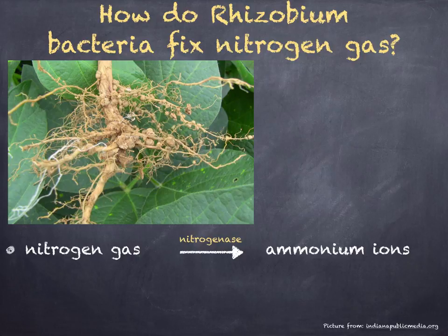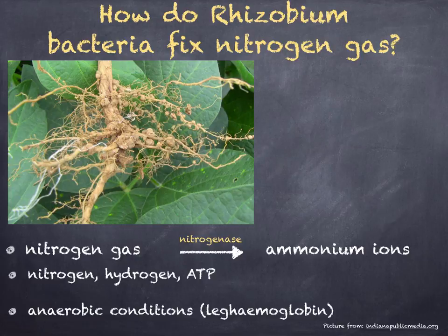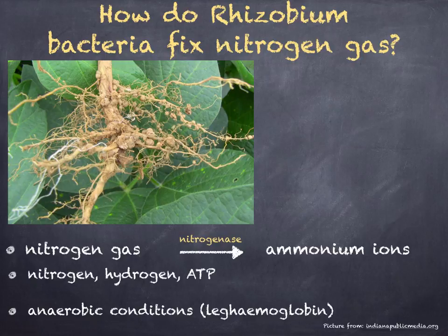The process requires a supply of hydrogen, ATP, and anaerobic conditions. The hydrogen comes from reduced NADP, which is produced by the plant. The ATP comes from the metabolism of sucrose produced during photosynthesis — when sucrose is used in respiration, ATP is produced. Anaerobic conditions are maintained by a protein similar to hemoglobin called leghemoglobin, which mops up any available oxygen.